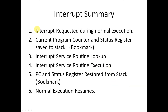And that's the basic summary. An interrupt request can happen at any time during normal execution. This saves the program counter and status register, making a bookmark to where we left off. We look up an interrupt service routine in the interrupt vector table, execute it, then restore the bookmark — the program counter and status register — and normal execution resumes from there. Simple as pie. Next, we're going to talk about the exact code on how this is implemented and how this all works.